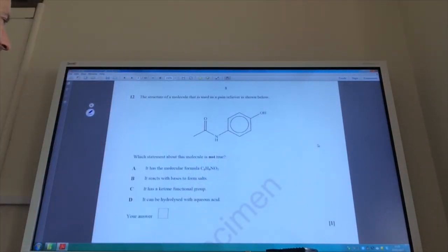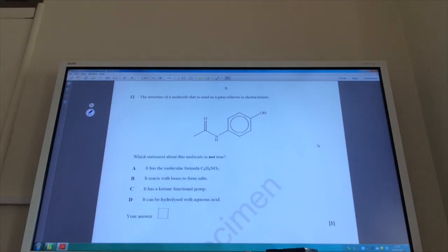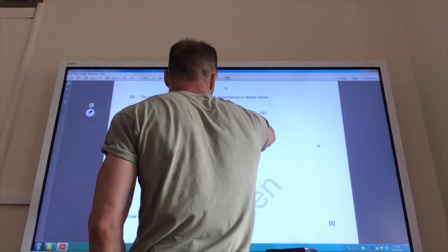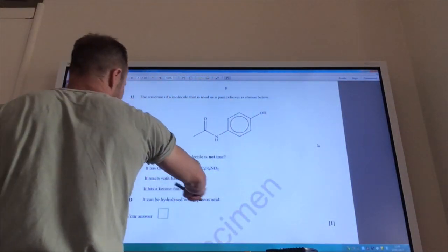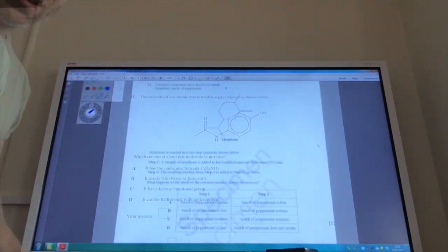Okay. For this one, you could waste quite a lot of time counting up your carbons, hydrogens and so on. So, let's see if there's an easy one. Does it react with base to form salts? Yes, it will because phenol is, of course, weakly acidic. It has a ketone functional group. No, it doesn't. This is a phenol group. This is an acyl group. And the one that isn't true is C. So, the answer to 12 is C.